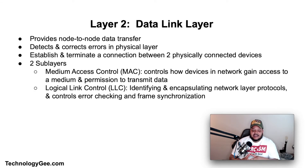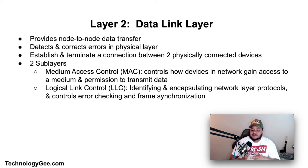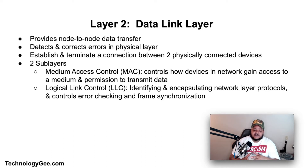Layer two is the Data Link Layer. The data link layer provides node-to-node data transfer, which is a link between two directly connected nodes. It detects and possibly corrects errors that may occur in the physical layer. It defines the protocol to establish and terminate a connection between two physically connected devices, and also defines the protocol for flow control between them. The IEEE 802 standard divides the data link layer into two sub-layers.